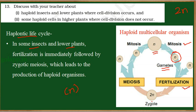Fertilization restores the chromosome number to diploid — it started as haploid and now the zygote is diploid. This diploid zygote undergoes meiosis and produces haploid cells. Some of those haploid cells degenerate, and the others undergo mitosis and develop into an embryo, which then develops into an adult.